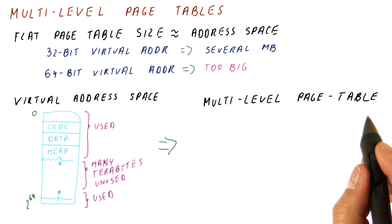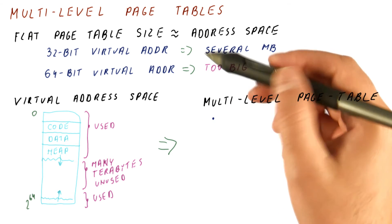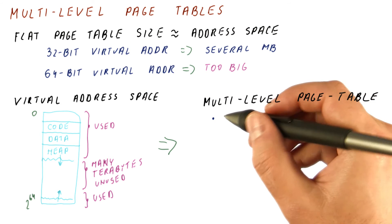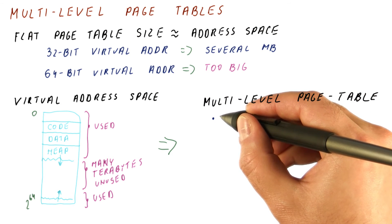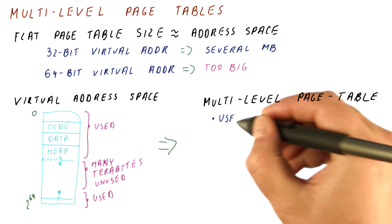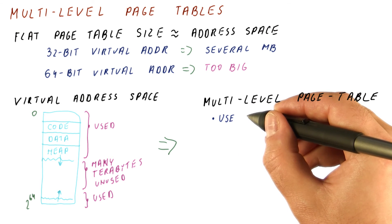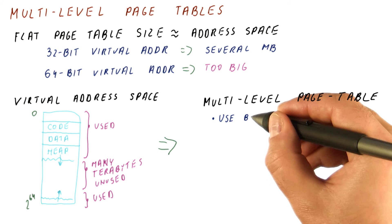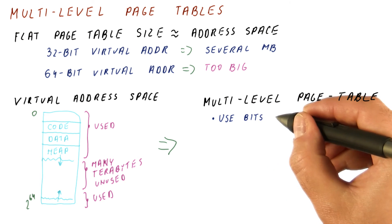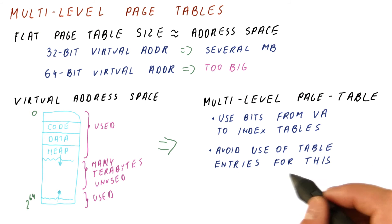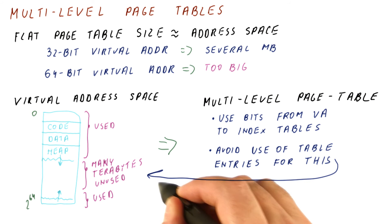So a multi-level page table combines the idea of a flat page table, where we use some bits from the virtual address to index the table. This works really well in hardware. Hardware really likes using some bits to index some sort of an array.